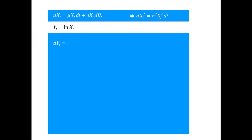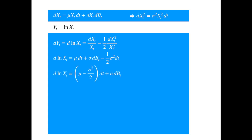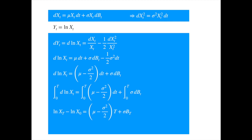Applying Ito's lemma to both sides, we get — substituting for dx and dx squared, we get — factoring out dt, we get a nice version that we can integrate from 0 to t. Exponentiating both sides, we get the desired solution. We can also take x naught inside the exponential. This is because the log and the exponential are inverse functions of each other, so exponential of log of x is just x.